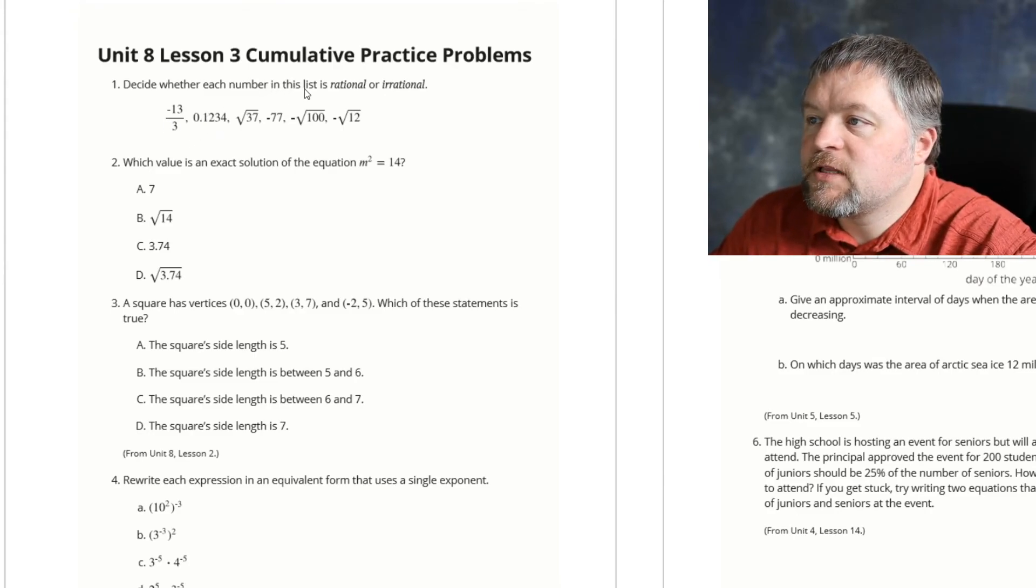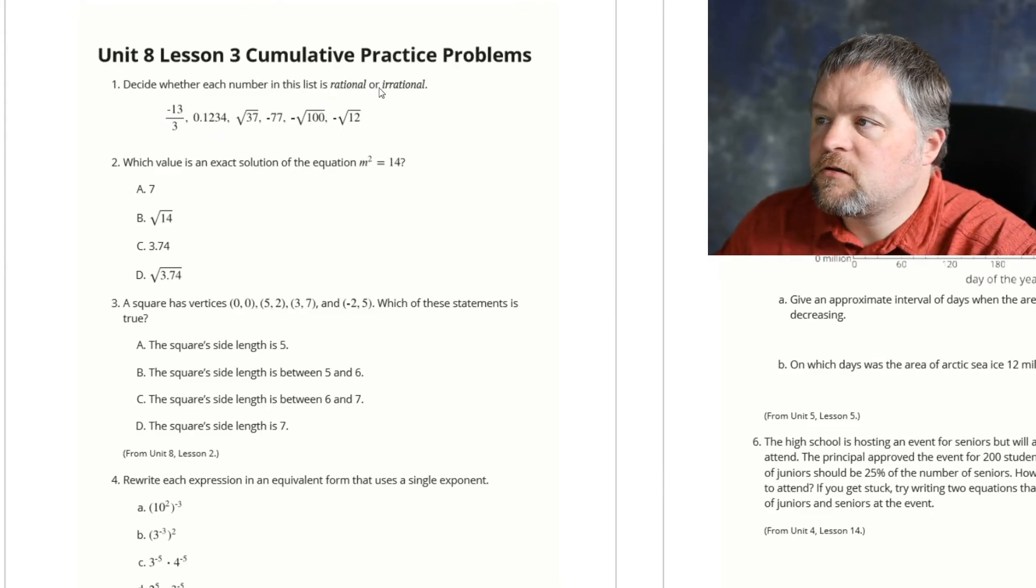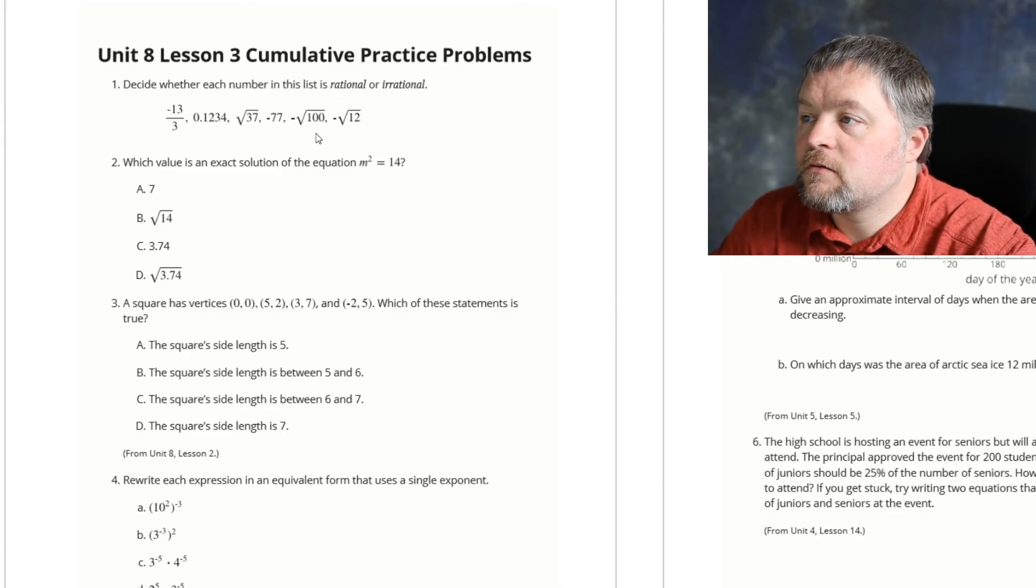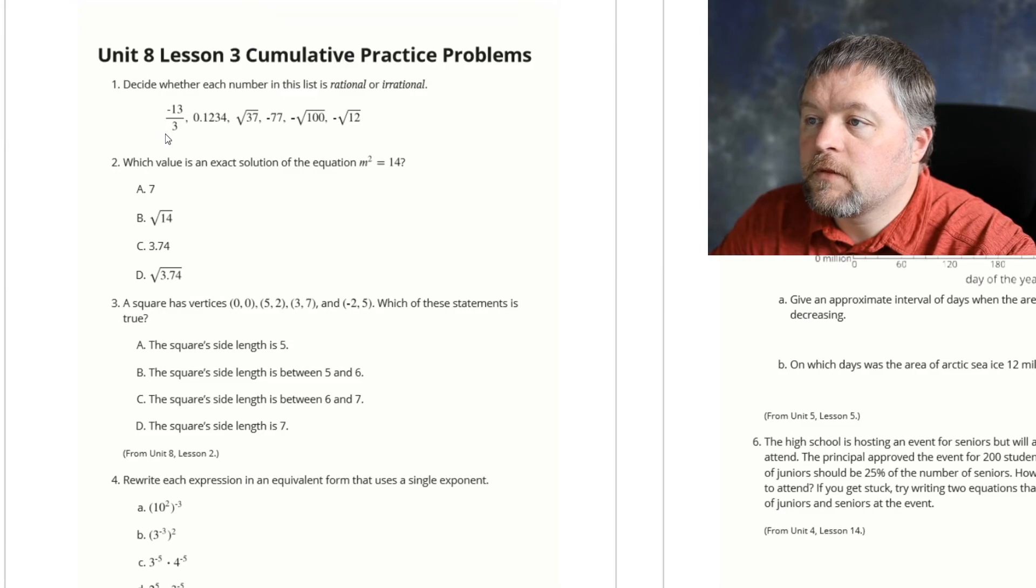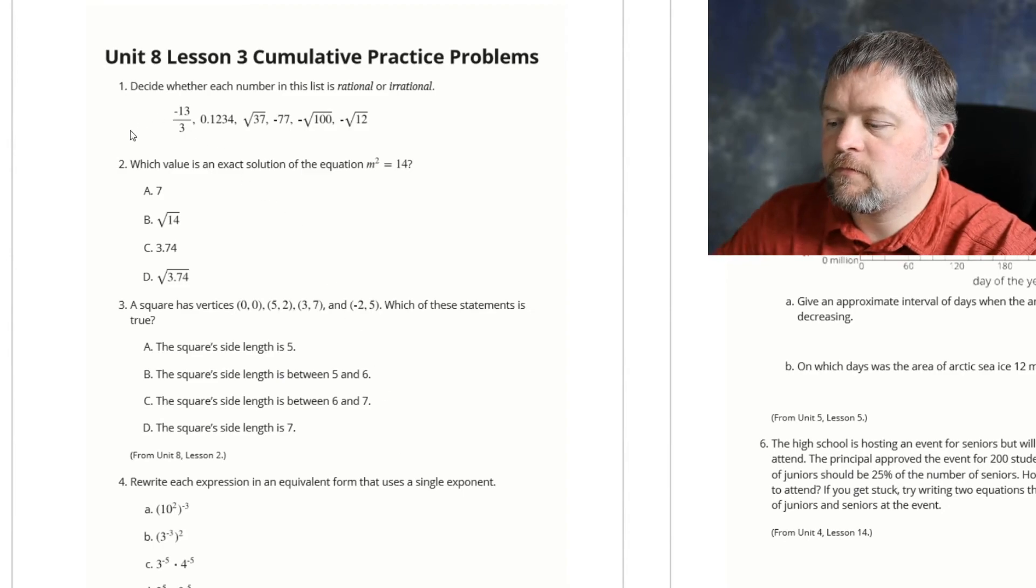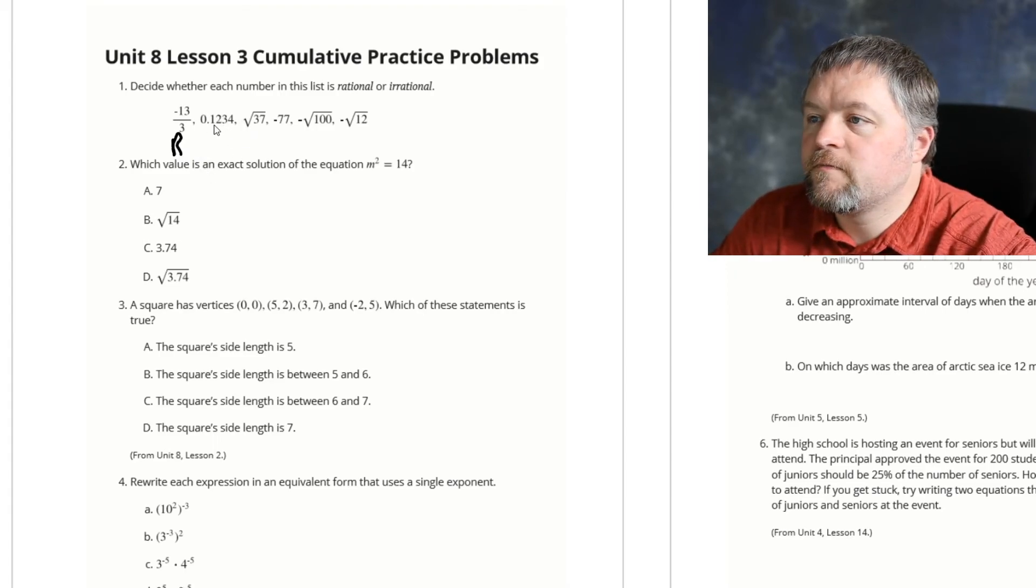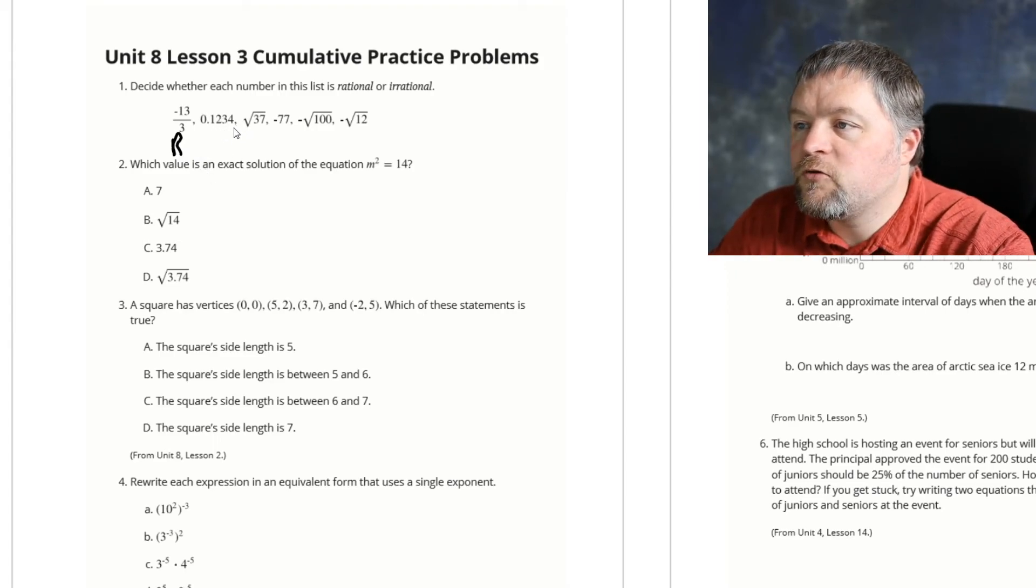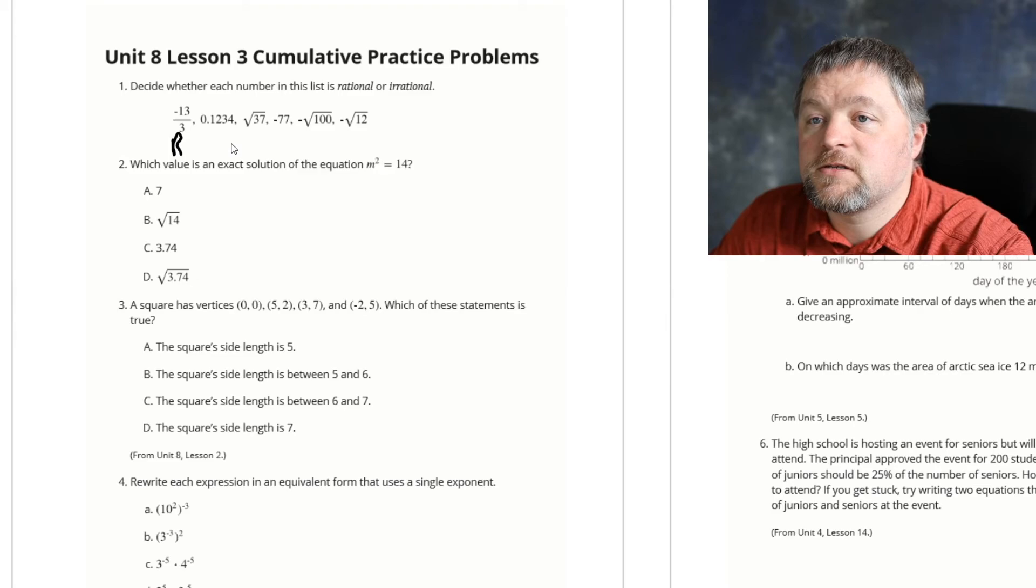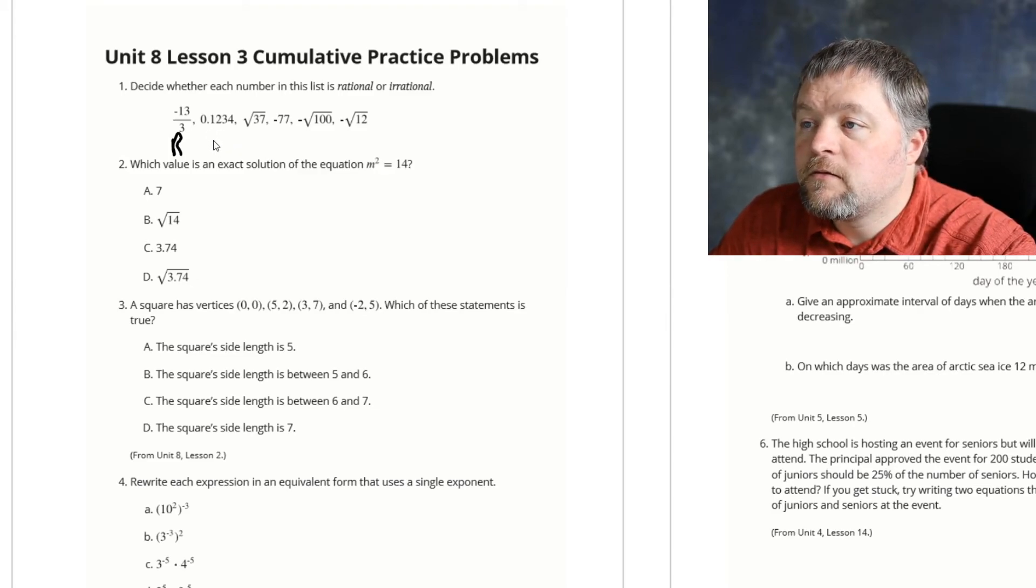Decide whether each number in this list is rational or irrational. Remember from the lesson, rational means it can be written as a fraction. This is a fraction, so that is clearly rational. Point 1, 2, 3, 4 would be 1,234 ten-thousandths.